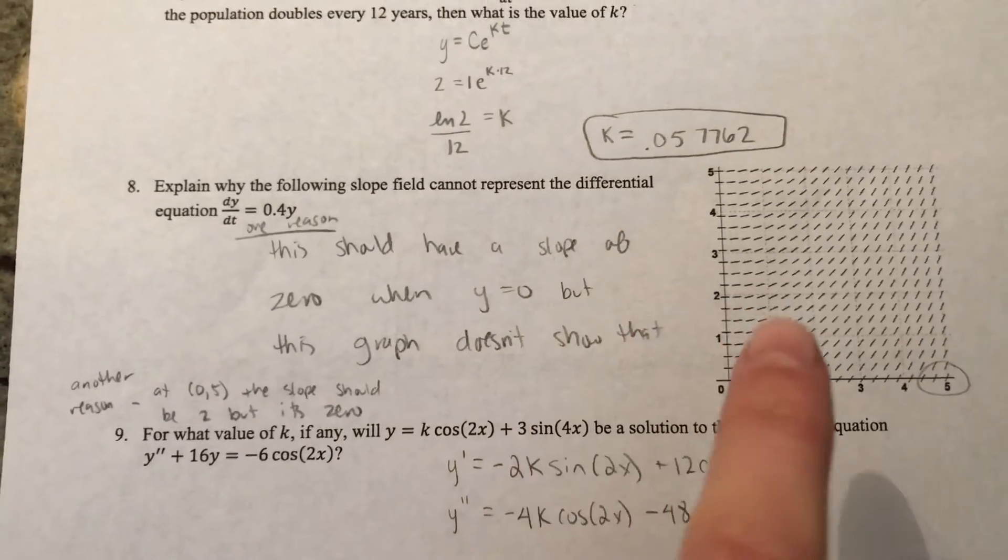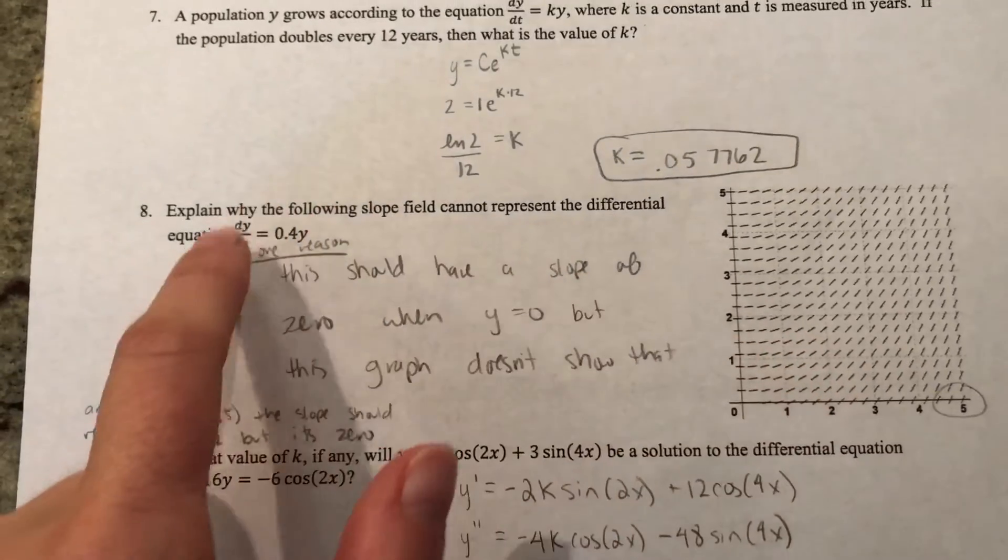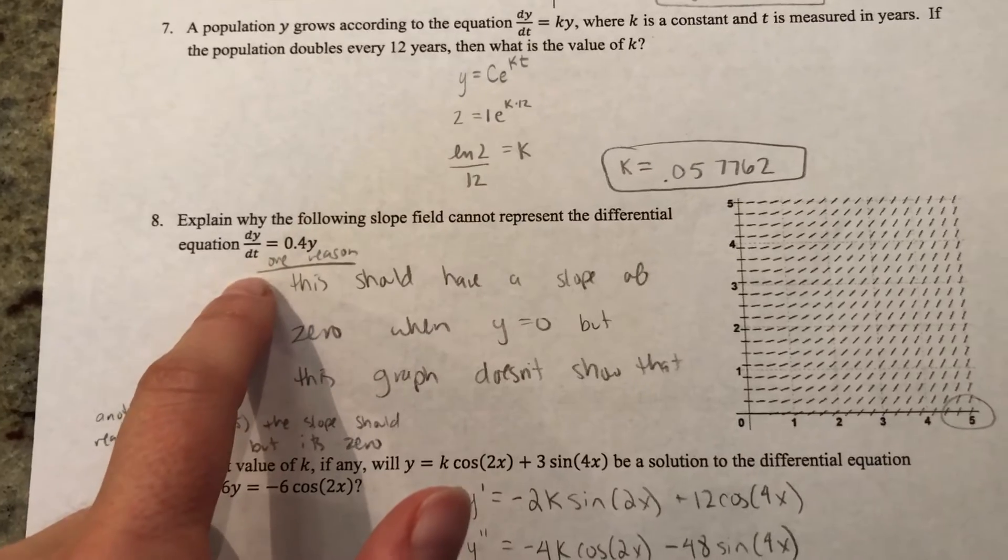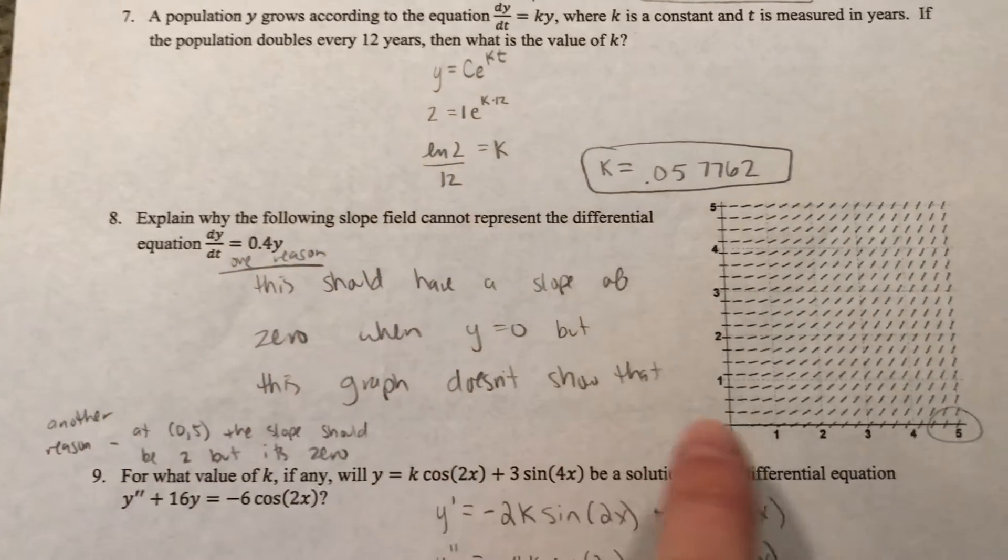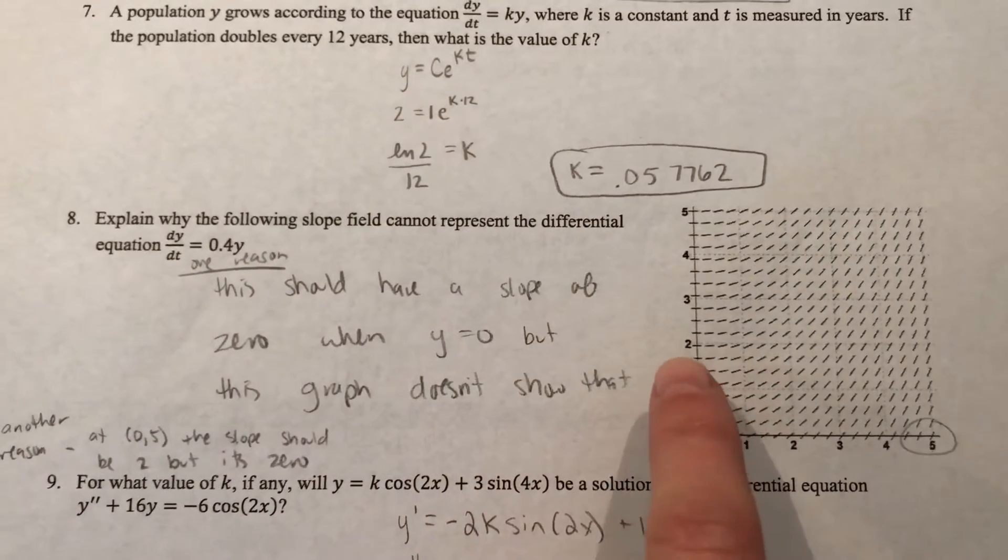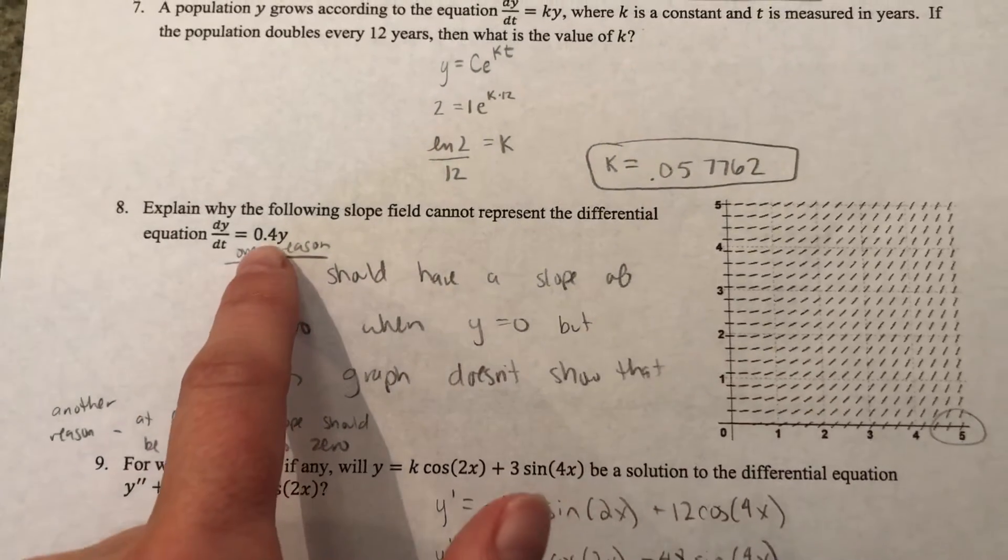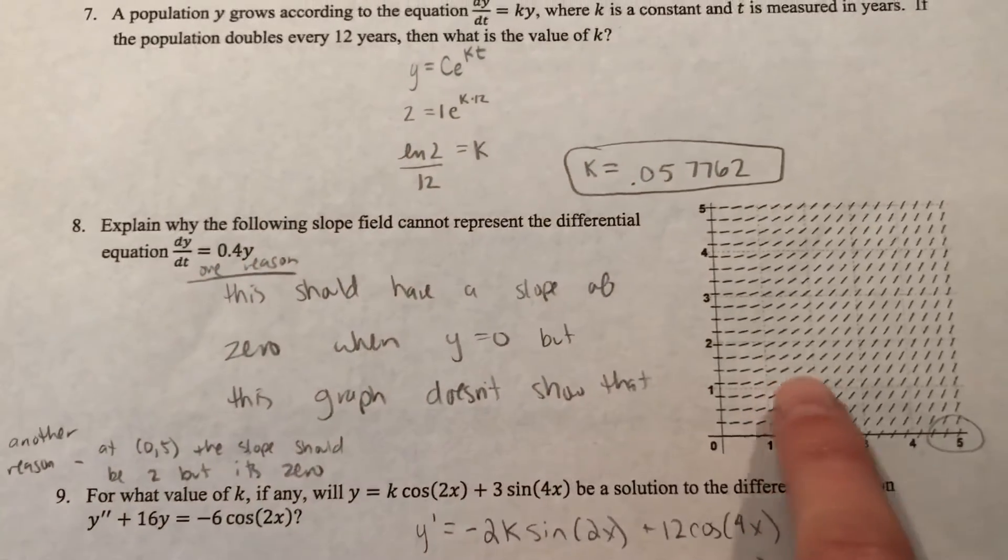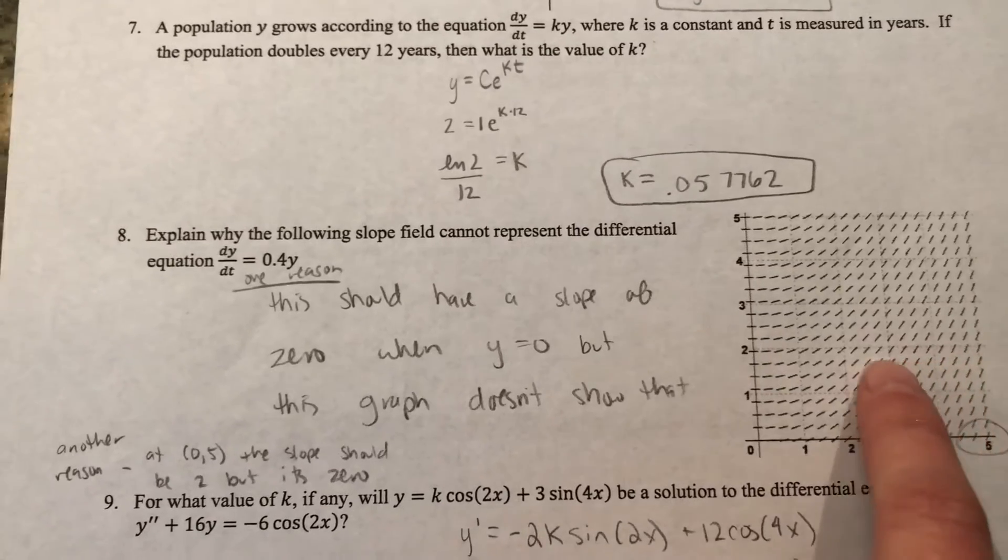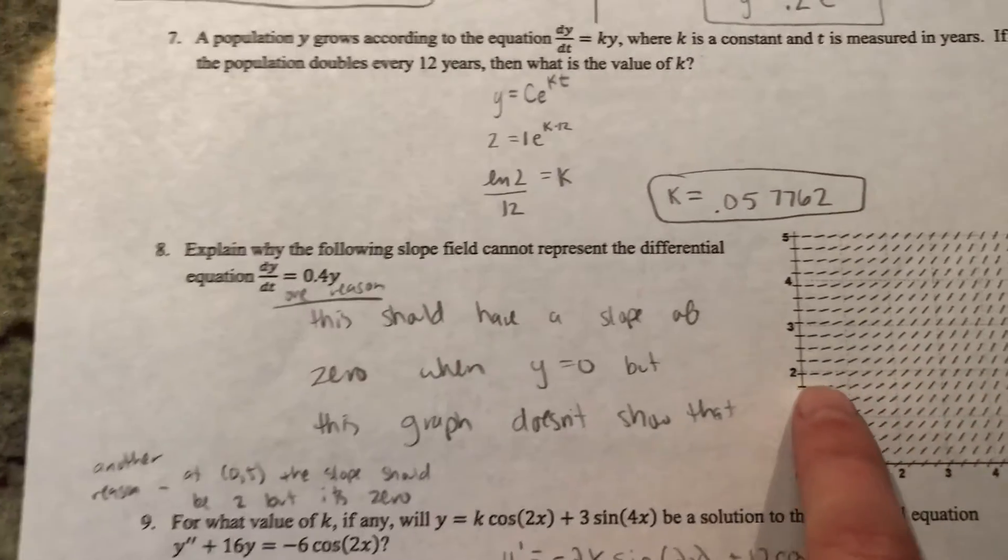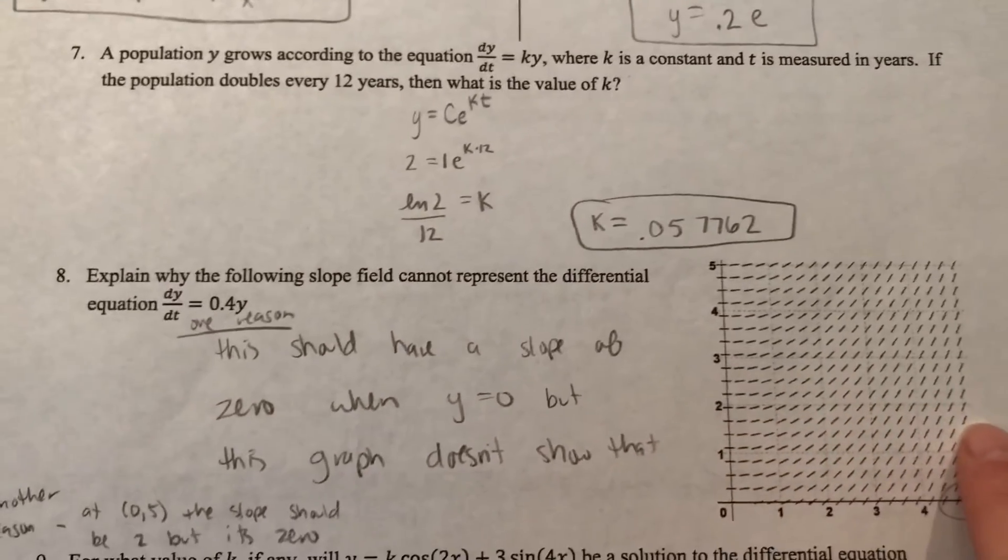For number eight, you're trying to see why this slope field doesn't match this differential equation. When it's only in terms of y, it should be horizontally parallel. But if you look along one horizontal strip, they're not horizontally parallel, so that's one reason why it doesn't match.